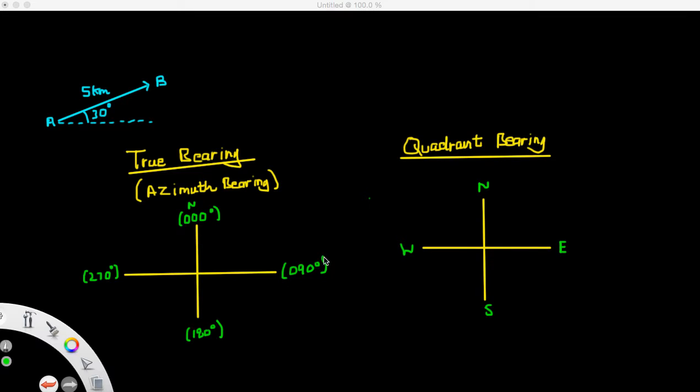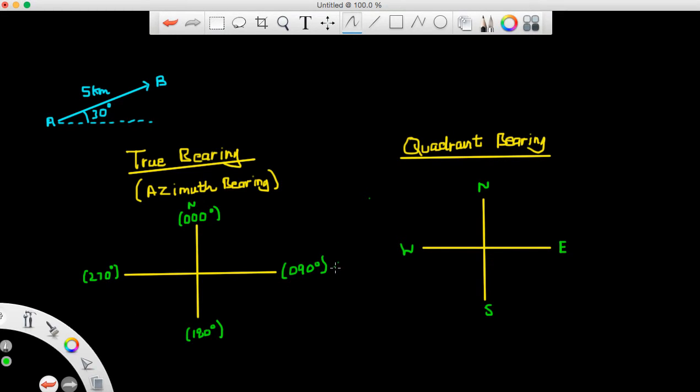So north is given as 000. East is 090. South is 180. And west is 270.